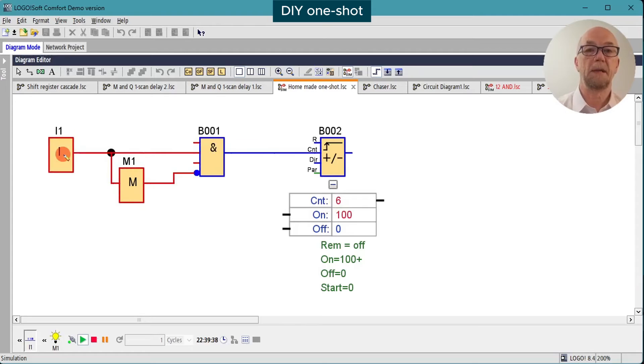So what's happening here is we turn on the input. It turns on input 2 to the AND gate. Meanwhile, the M hasn't turned on yet, and it's running through an inversion input, so the AND gate output turns on and triggers the count.